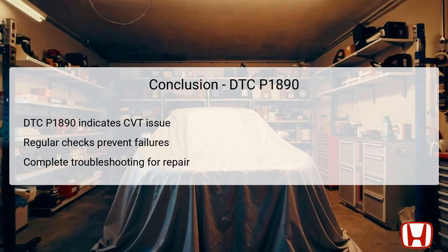In conclusion, DTC P1890 indicates a significant issue within the CVT speed control system of Honda Fit models from 2015 to 2020. Proper troubleshooting steps can effectively identify the root cause, whether it involves electrical connections, faulty components, or the transmission itself. Timely diagnosis and repairs are critical in sustaining vehicle performance and ensuring driver safety. Additionally, scheduled preventive maintenance can help mitigate the chances of reoccurrence, safeguarding against costly repairs in the future. Drivers should remain vigilant for symptoms associated with this trouble code and always consult with qualified technicians to facilitate efficient repairs and maintain optimal vehicle function.